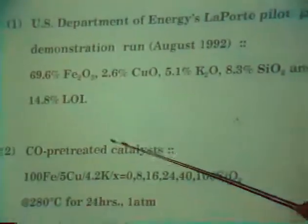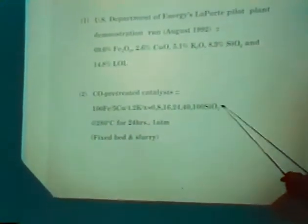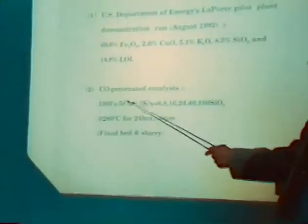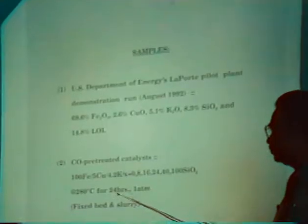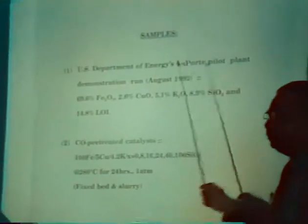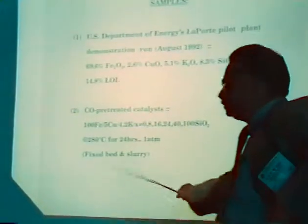The composition of the catalyst was prepared by UCI. The second set of catalysts are prepared by Professor Bukur. Here we have varied the support from 0 to 100% SiO2 content. They've been CO-treated at 280 degrees centigrade for 24 hours at atmospheric pressure. They are used for both fixed-bed and slurry studies, but I will be talking about fixed-bed results.